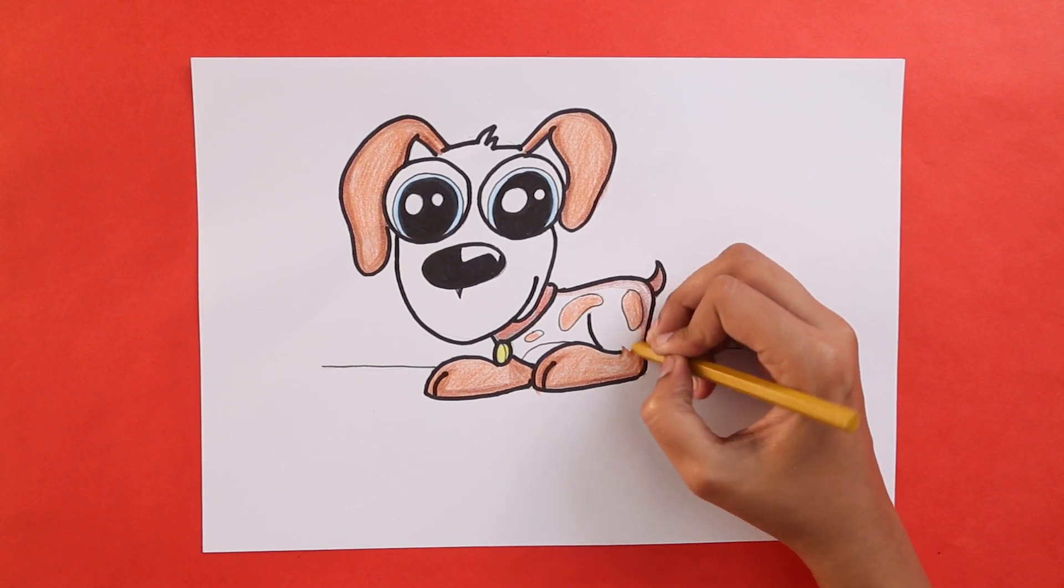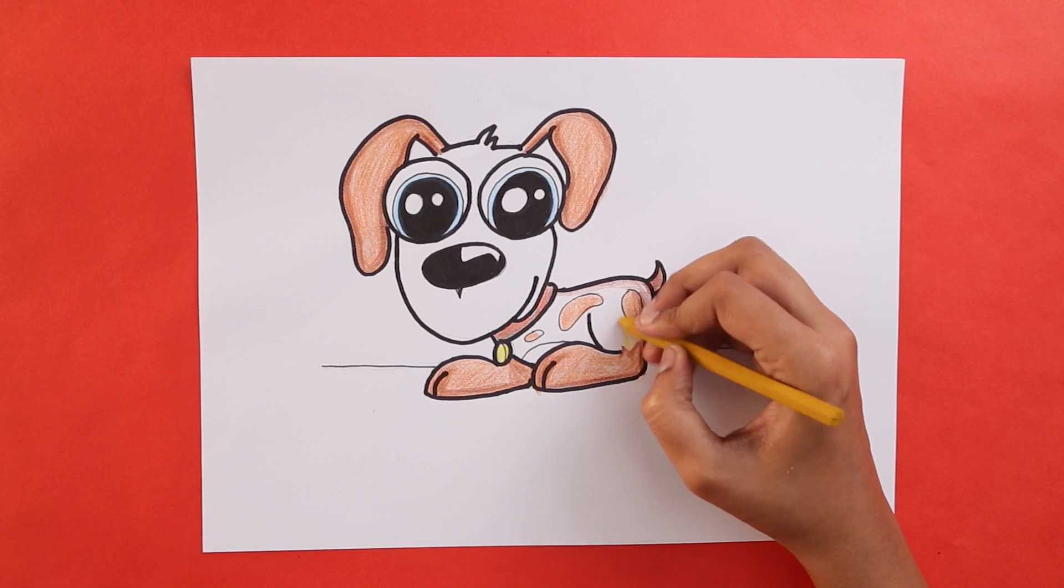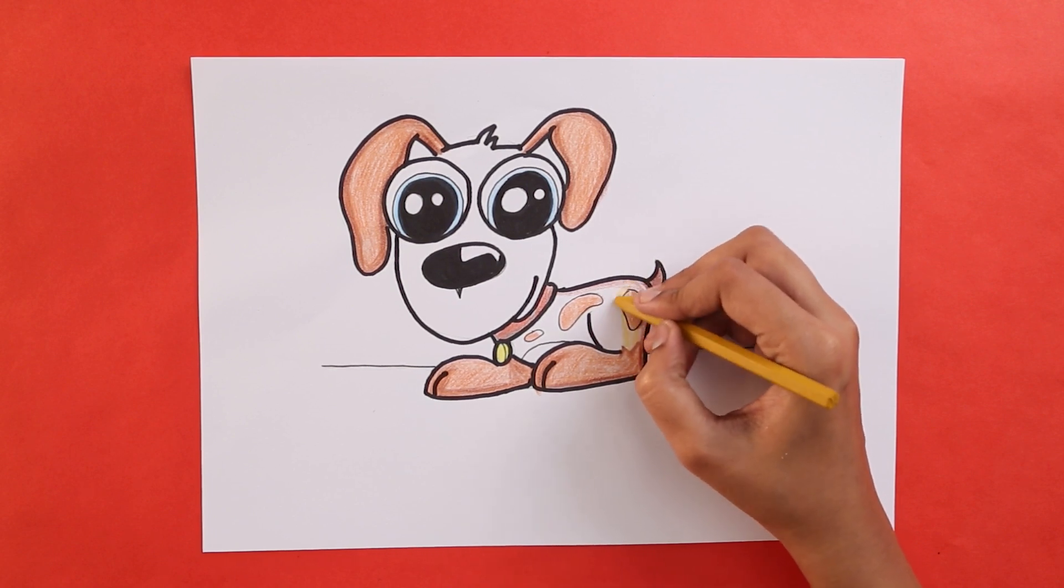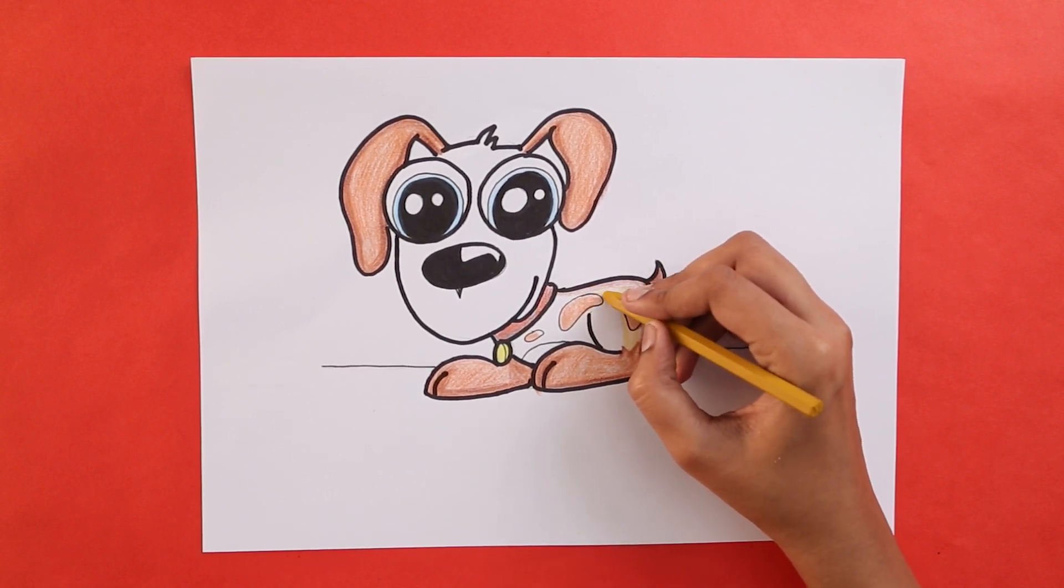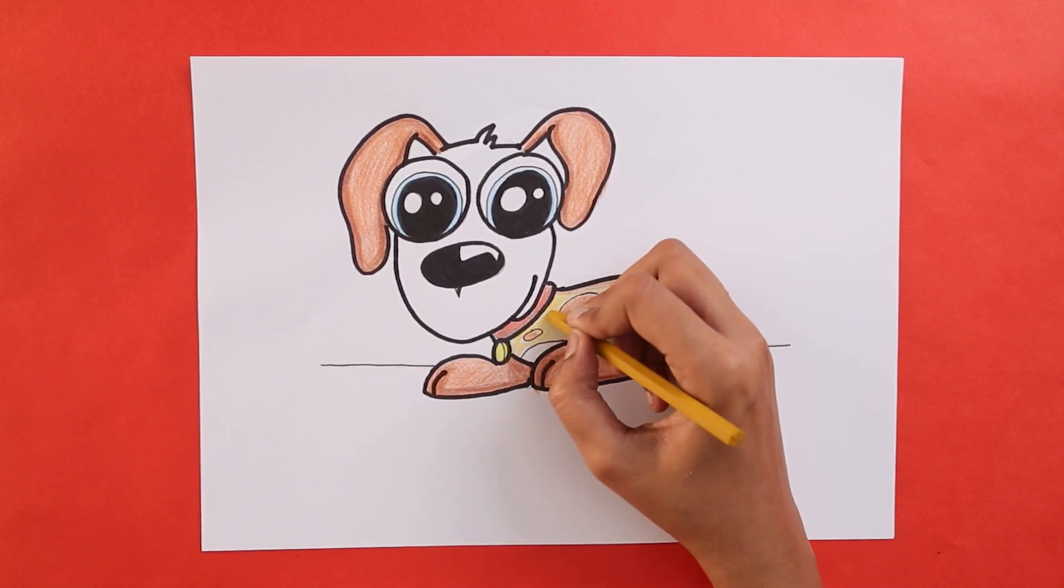Now taking a mustard yellow, you can color the remaining part of the dog. Fun fact time again. Did you know that your dog can smell your feelings? That's why when you're sad, your dog comes and cuddles up with you in order to make you feel better.